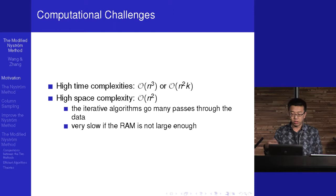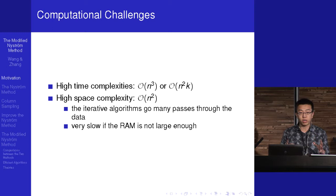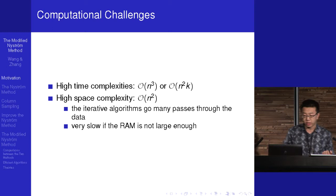They also have high space complexity. Since matrix inverse and eigenvalue decomposition are usually solved by some iterative algorithms, we need to put the whole kernel matrix into RAM. Otherwise, the swap between RAM and disk can be very slow, and you need to swap many times. So the space complexity is also high.